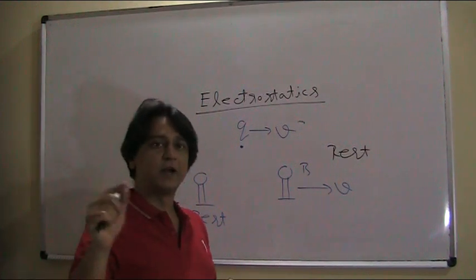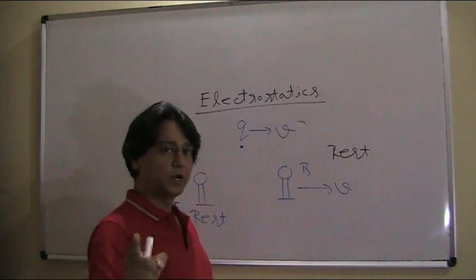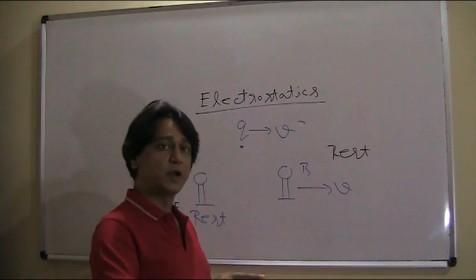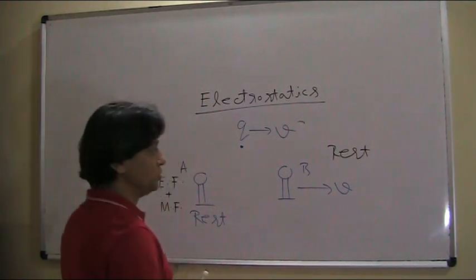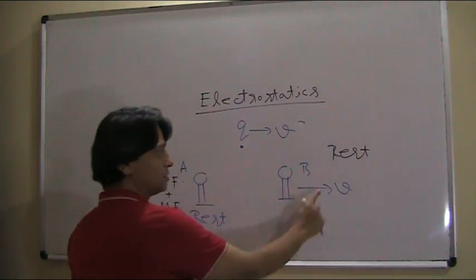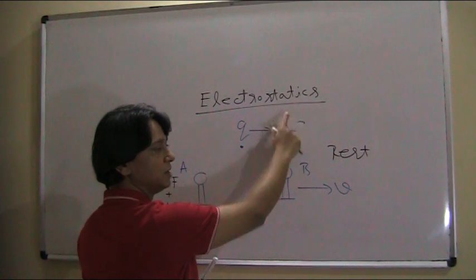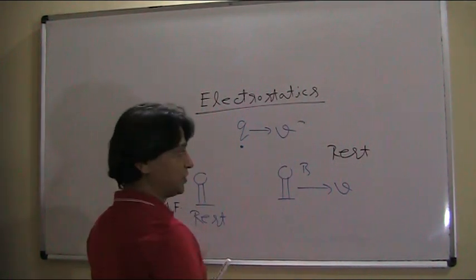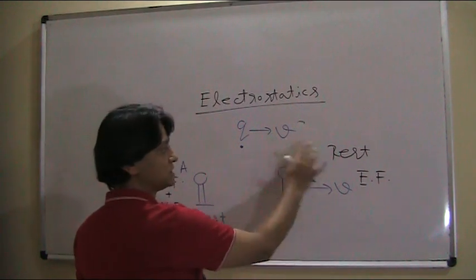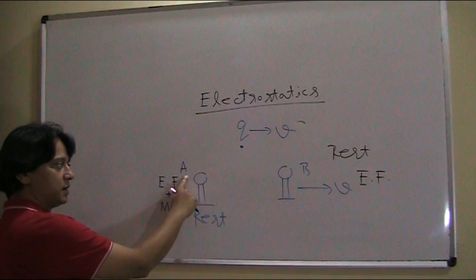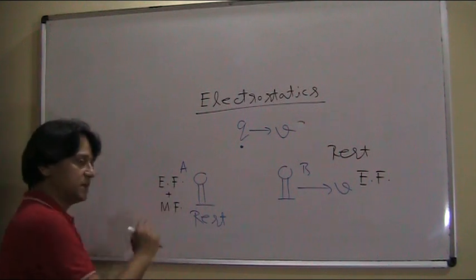For example, you are sitting in a train and sitting in front of a passenger — the passenger appears at rest relative to you. Similarly, if the charge is in a static condition for an observer, it can only produce an electric field. So observer B finds that charge q produces only an electric field, whereas observer A, for whom the charge is moving, sees both electric field and magnetic field.